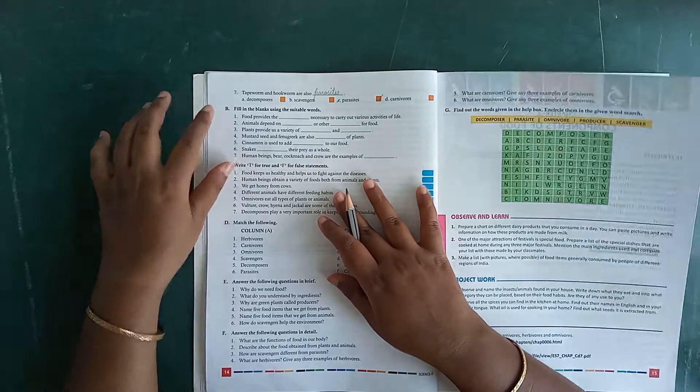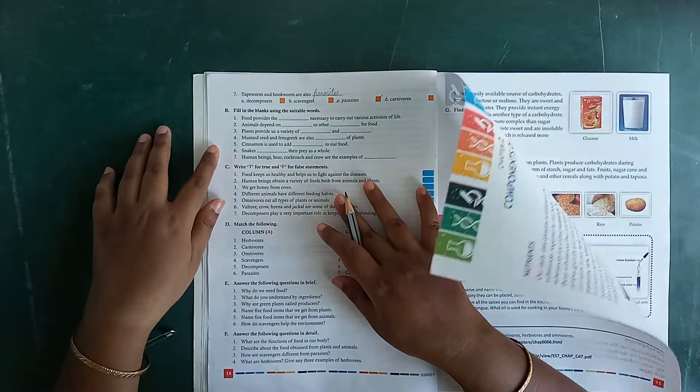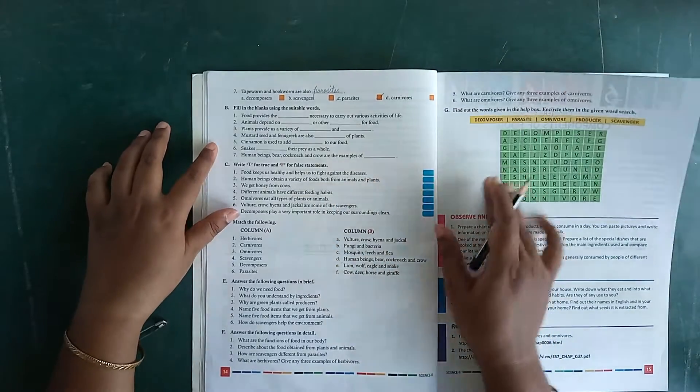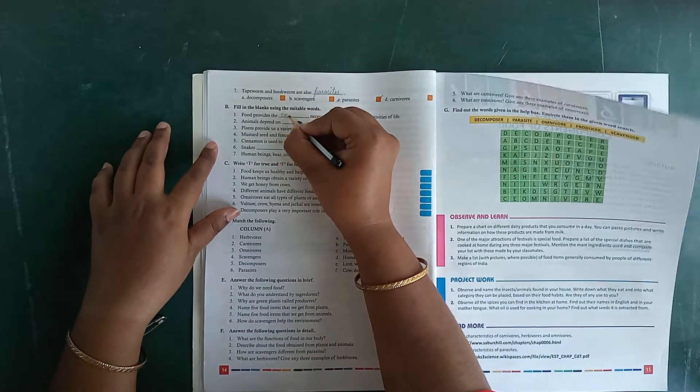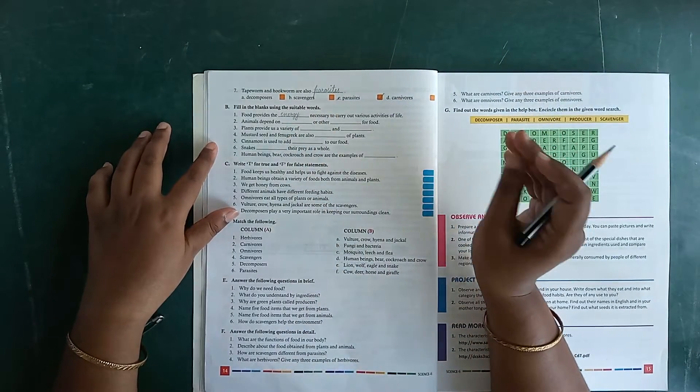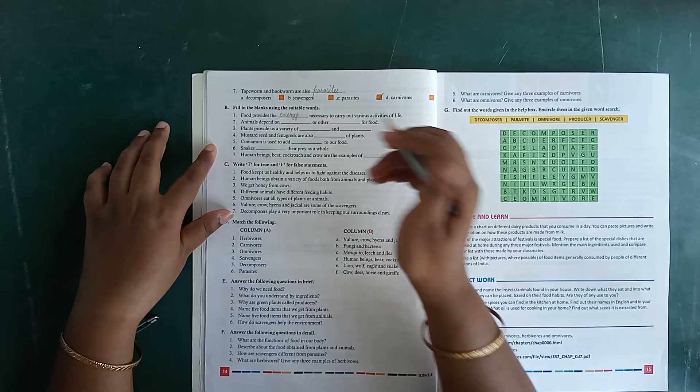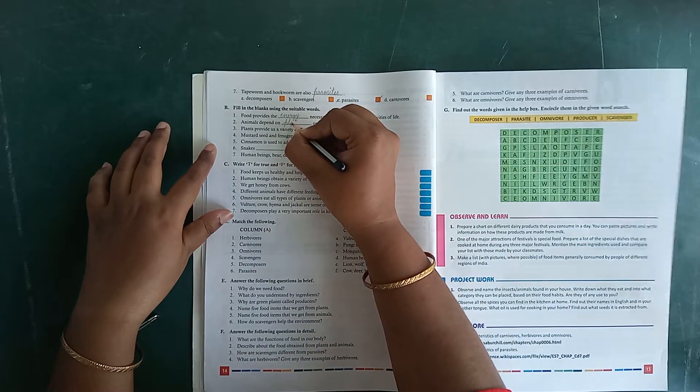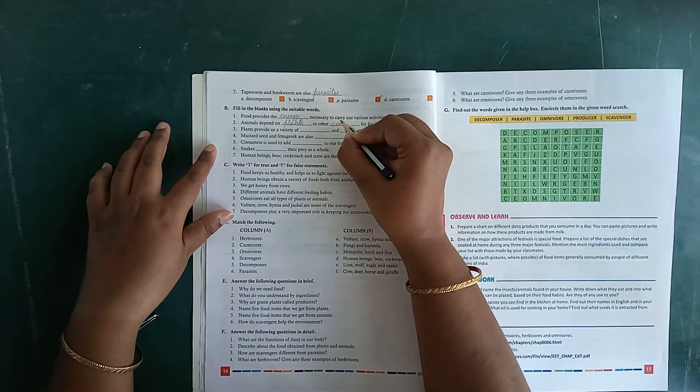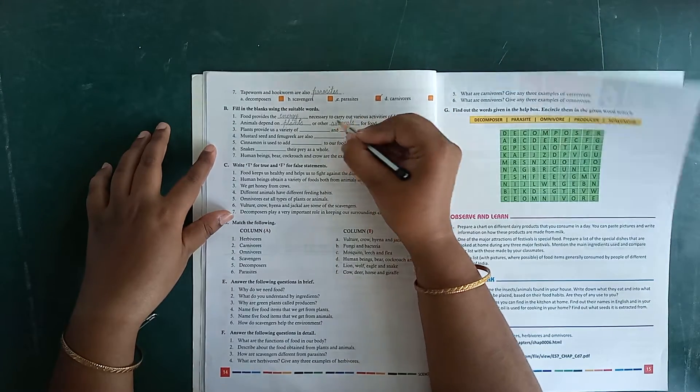Fill in the blanks using the suitable words. Number one, food provides the dash necessary to carry out various activities of life. Food provides the energy, E-N-E-R-G-Y, energy. Animals depend on dash or other dash for food. Animals depend on plants, P-L-A-N-T-S, plants or other animals, A-N-I-M-A-L-S.